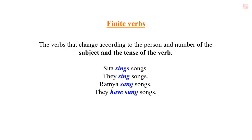Here, observe all four sentences. In the first sentence, the verb is written as 'sings'. This is in present tense, and the subject of this sentence is Sita. This is third person singular. We are using third person singular in present tense, and so we added 's' to the root form of the verb. That is the change in this sentence.